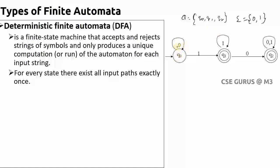So q0 on 0 has a path, q0 on 1 has a path, q1 on 0 has a path, q1 on 1 goes to a self loop, q2 on 0 and q2 on 1 also have paths. Importantly, if q0 on 1 goes to both q1 and q2, you cannot call it a DFA. The output must be only one state — that is the unique computation constraint in DFA.